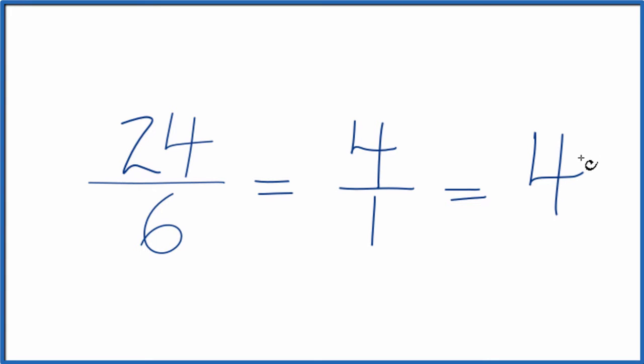So in answer to our question, when we simplify 24 sixths, we get 4 over 1, or just 4. Note that this is an improper fraction. The numerator is larger than the denominator. In this case, we could just divide 24 by 6 and go directly to 4.